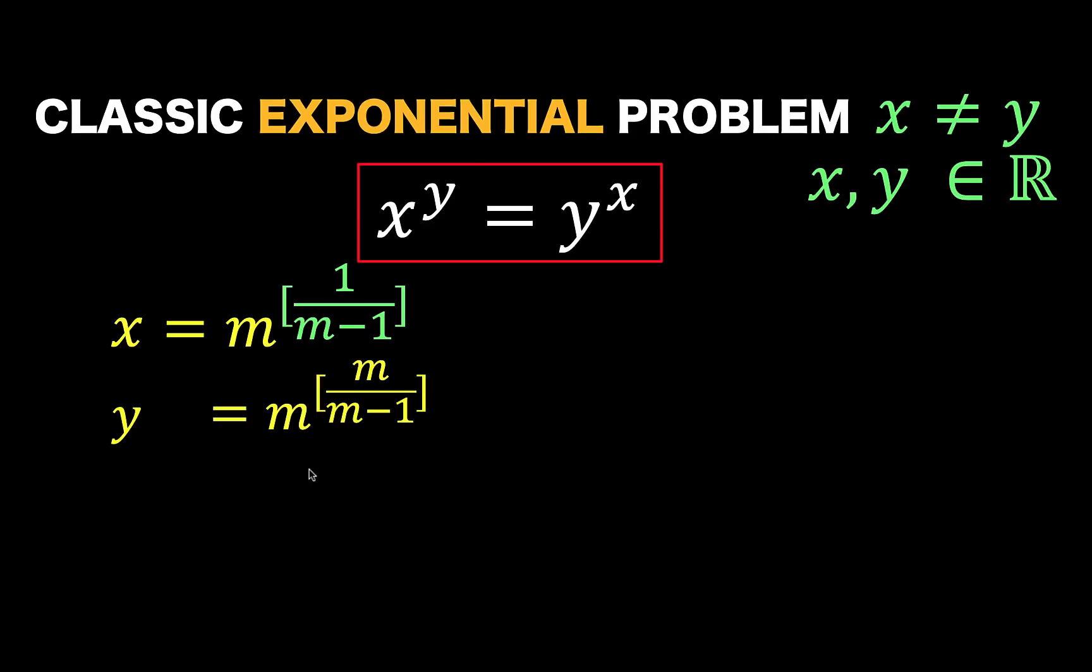But what does this accomplish? We just rewrite x in terms of another variable m, and we rewrite y in terms of another variable m. Well, these two formulas enable us to find specific values for x and y by substituting any real number to this variable m. And later on, we are going to define what are the restrictions of this m.